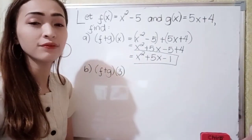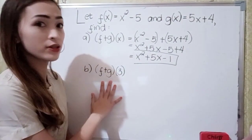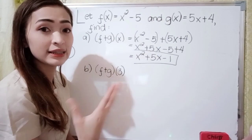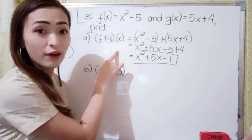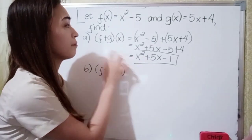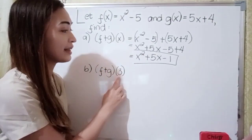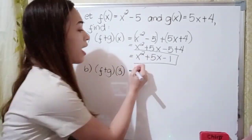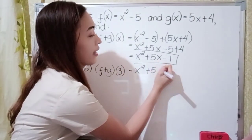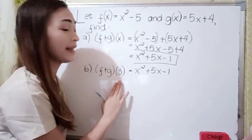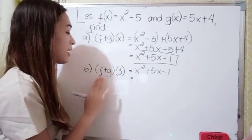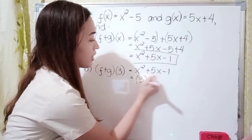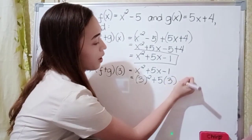Next for letter b, we have f plus g of 3. As you can see, this has 3 while the previous one has x. What you're going to do first is just solve f plus g of x, and now we have that answer. So substitute 3 to x. We have x squared plus 5x minus 1, so it will become 3 squared plus 5 times 3 minus 1.